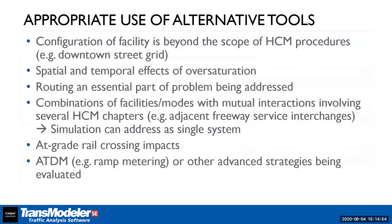Chapter 6 in the HCM gives some guidance on when you might want to consider using alternative tools. Based on my own experience as a practitioner, if you have a downtown street grid, within the HCM you're only going to be able to do an analysis for one arterial at a time — you can't look at an entire downtown area network. You also need to be aware of when you may have over-saturation and deal with that properly by doing a multi-period analysis.